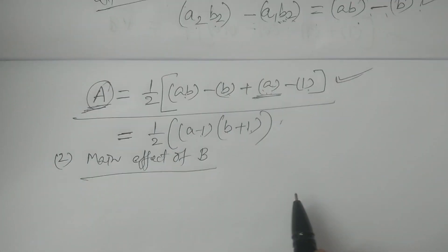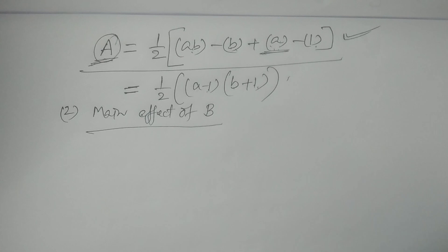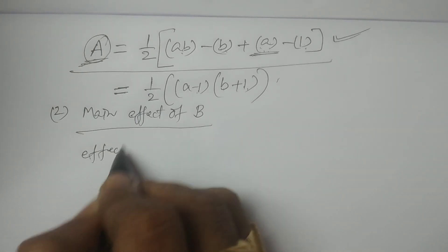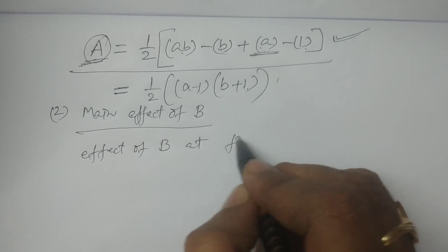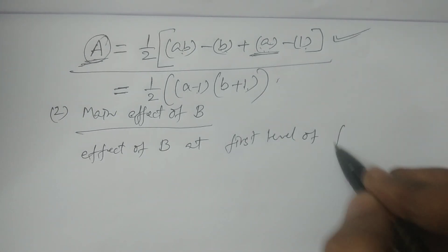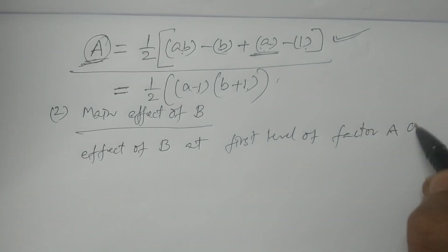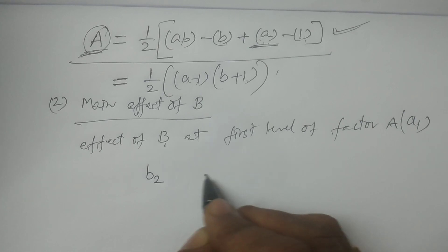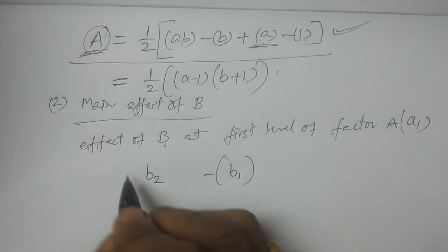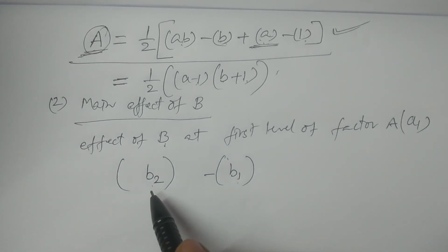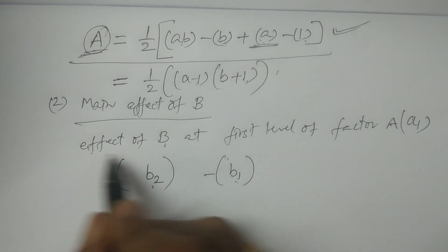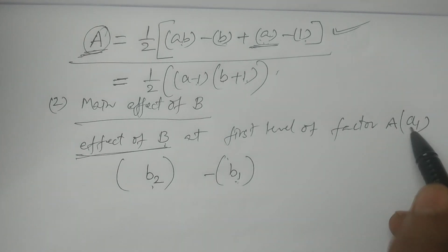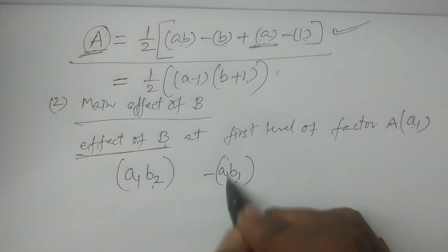Now for the main effect of factor B. The effect of factor B at the first level of factor A is B2 minus B1. The treatment combination at the first level of A: A1B2 minus A1B1.